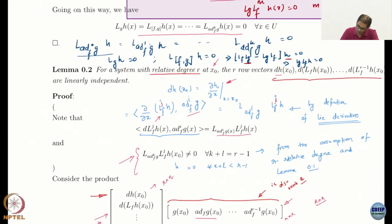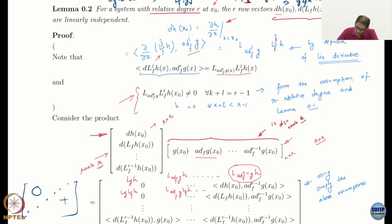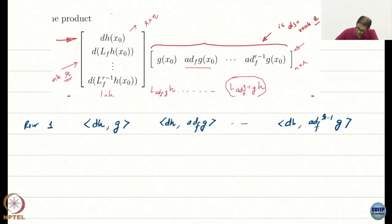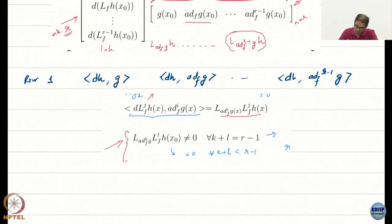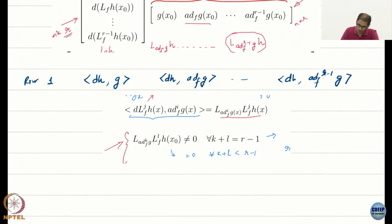If you look at the first term and the second term, dh g, we just evaluated this. dh g corresponds to... I am going to write this out also. I am going to use this. What is this? It is saying that this mess is actually equal to this and I also have, from the previous lemma and the fact that we are relative degree r system, that this is non-zero only when k plus l equals r minus 1 and it is zero for k plus l less than r minus 1.